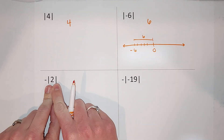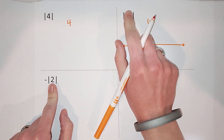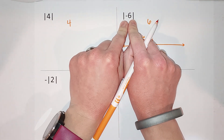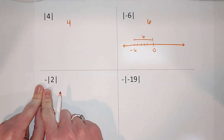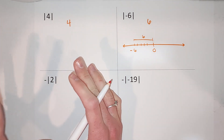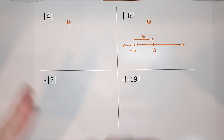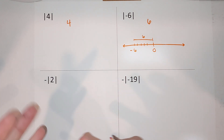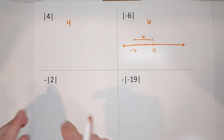Here's the difference between these two examples: in one, the negative is inside the bars; in the other, the negative is outside the bars. According to order of operations, absolute value is considered a grouping symbol, so we do what's inside first.